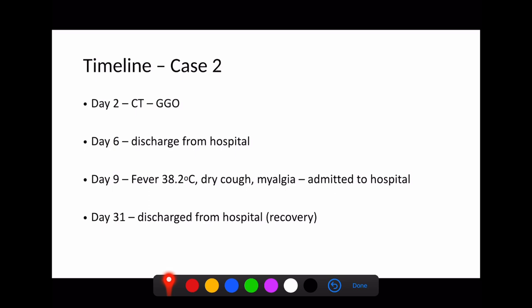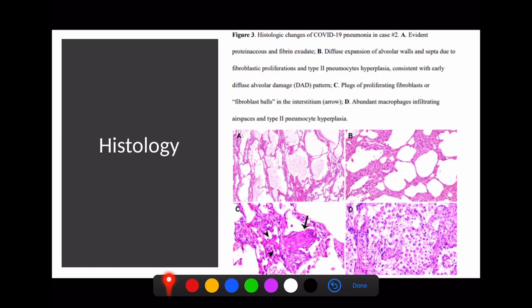The histology of these patients seem very similar to that of the first. Again, we're seeing this proteinaceous exudate filling up the alveoli. We're seeing thickening of the interstitial lines with a lot of inflammatory exudate. And these type 2 pneumocytes seem to be becoming hyperplastic, probably related to the inflammatory milieu that's around there. They describe these so-called fibroblast balls in the interstitium, these things here that you can see with lots of fibrin deposition and a few nucleated cells there as well. And lots of macrophage infiltration and type 2 pneumocytes that are again being hyperplastic.